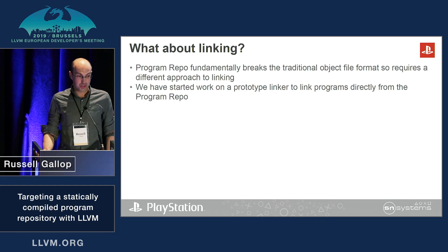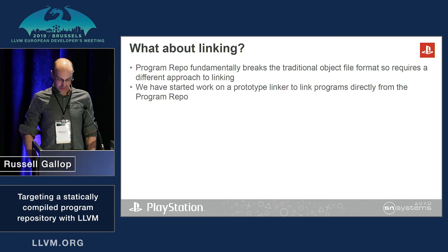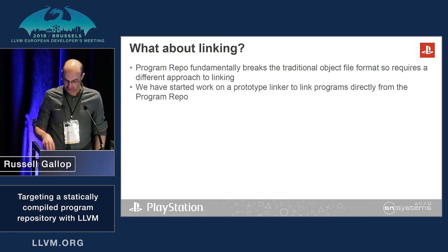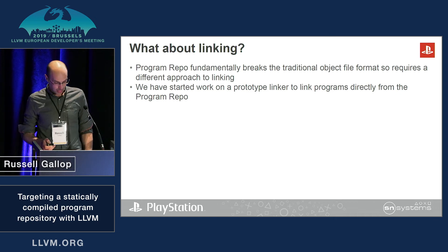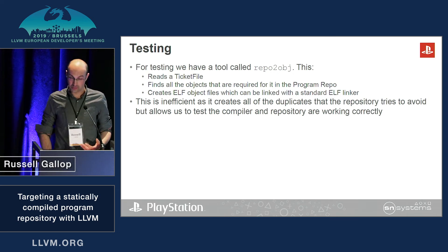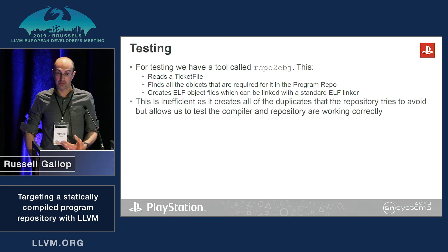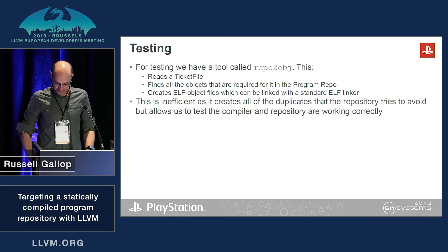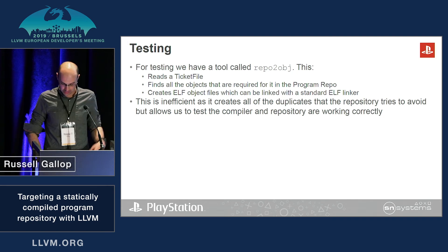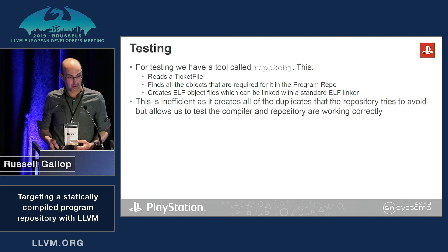Because the program repo breaks the traditional object file format, it requires a different approach to linking. We have started work on a prototype linker to link programs directly from the program repo. For now, for testing, we're using a tool called RepoToObj. This recreates ELF files from the program repo so they can be used by a standard ELF linker. This is fairly inefficient as it creates all the duplicates we've gone to all the work to avoid, but it lets us test that the compiler and repo are working.